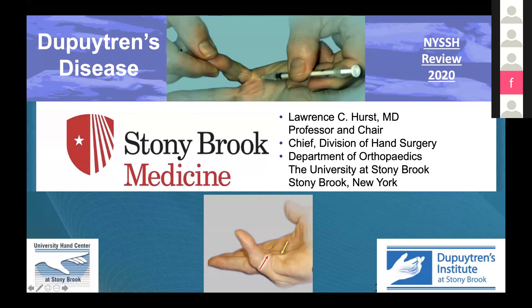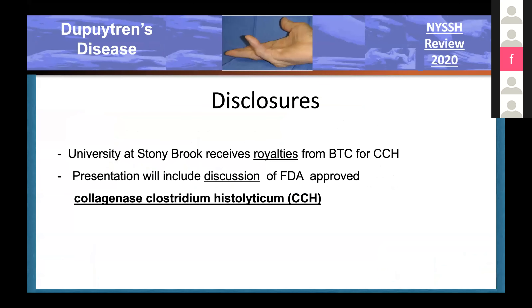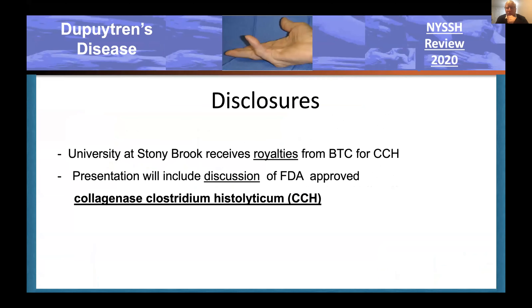Good morning everybody. We're going to give a quick run through here on Dupuytren's disease. Disclosures: the university gets a royalty from BTC because of our invention of collagenase.